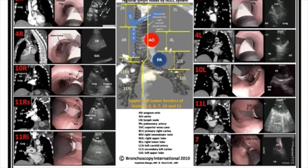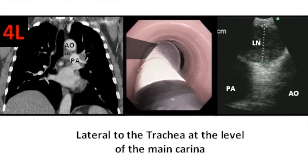While this poster addresses most of the lymph node stations identified on the IASLC map, only one example will be used to illustrate how the poster helps prepare for EBUS TBNA. Let's look at the left lower paratracheal lymph node station — station 4L using internationally accepted nomenclature.